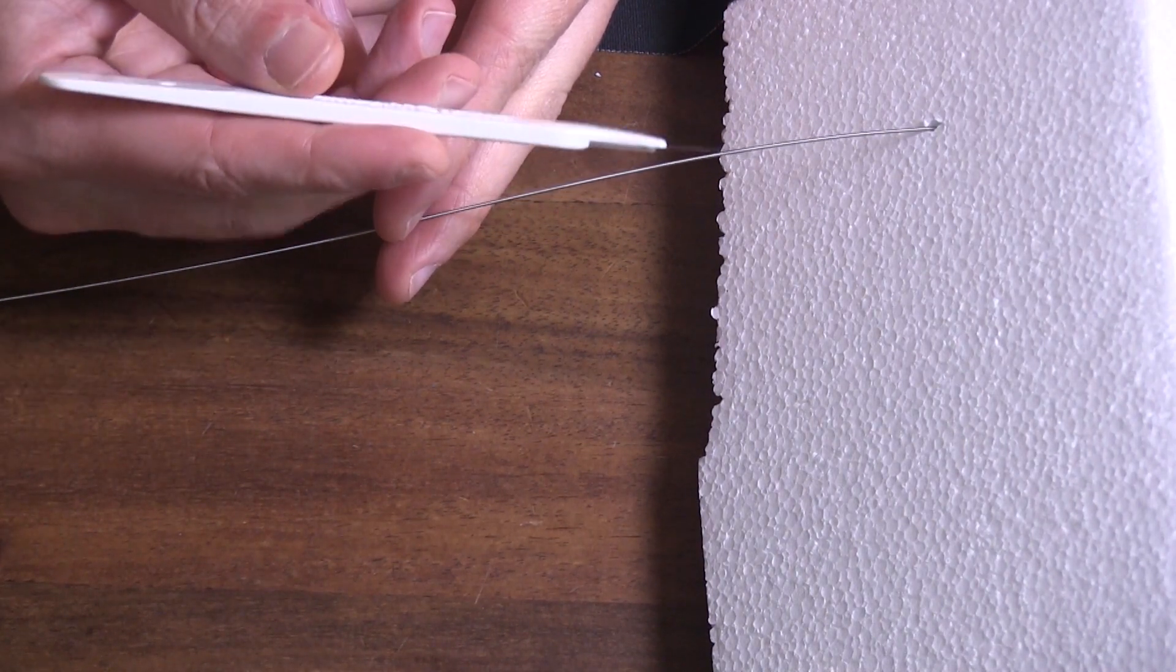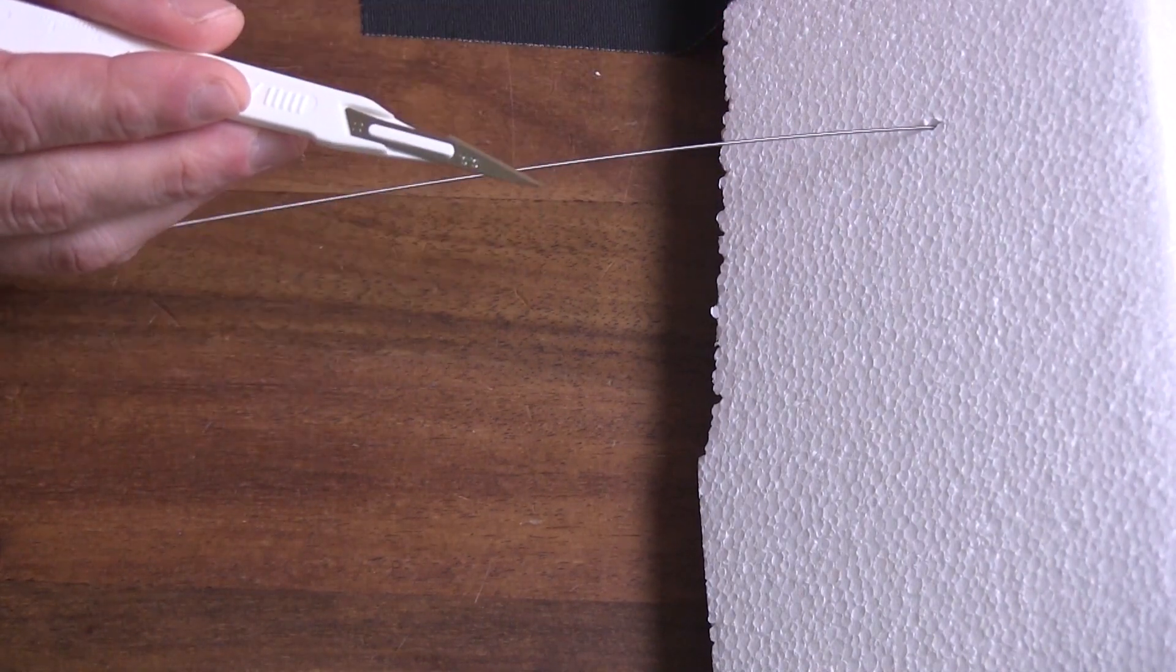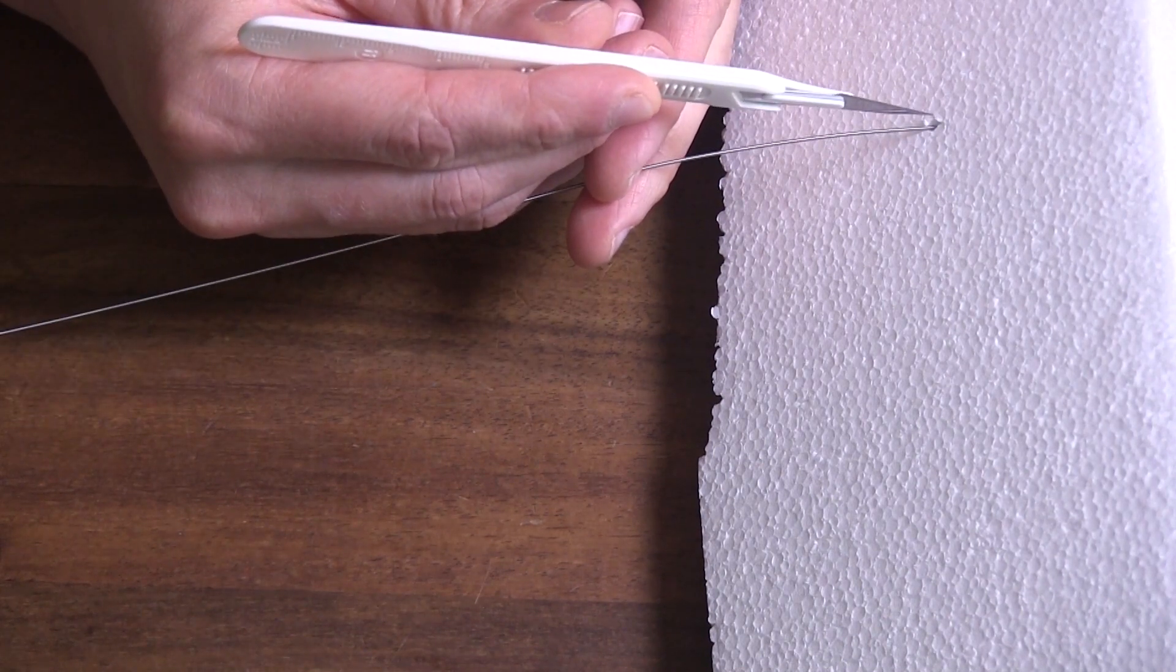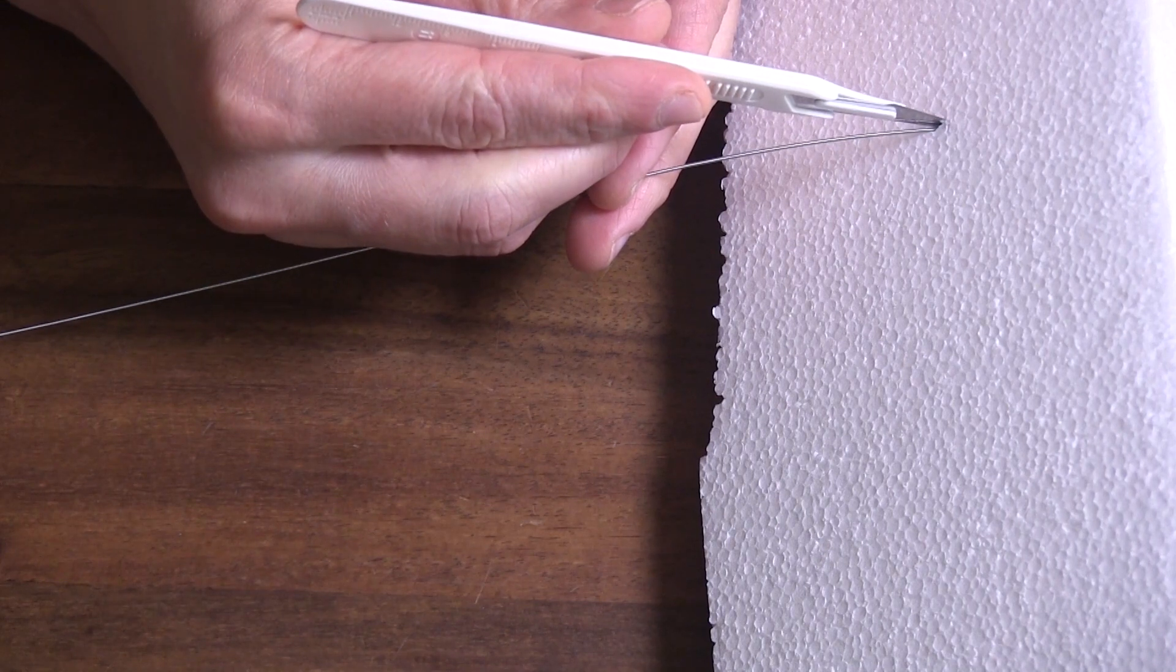We're going to make a nick. Now the way I prefer to do this is to run the flat portion of this 11 blade right over the wire into the hole that you've made with your needle and make your nick.